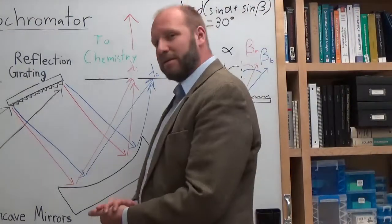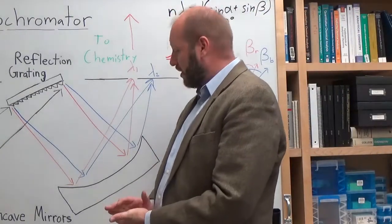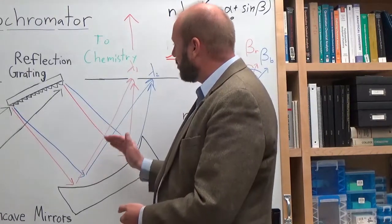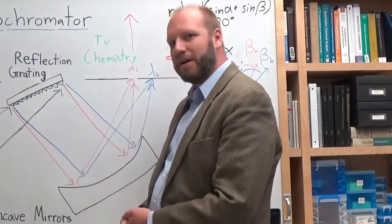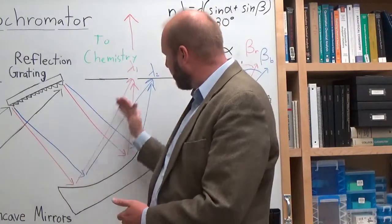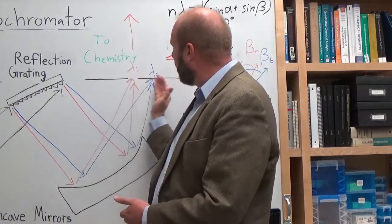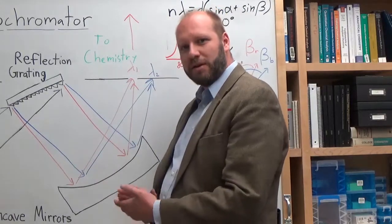So to generate an instrument that can select a different wavelength, we can then change the incident angle by rotating this diffraction grating. What that does is focus the light at different points on the exit slit so that we can control the wavelength of light that will hit it and then go on to do chemistry.